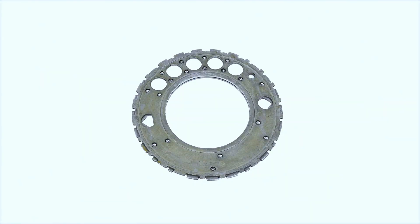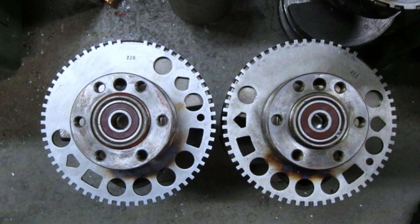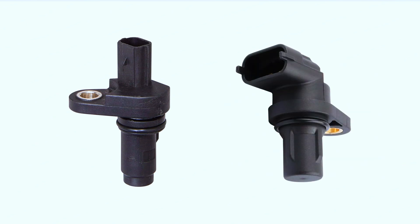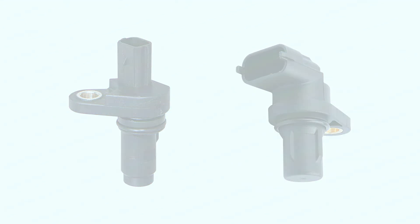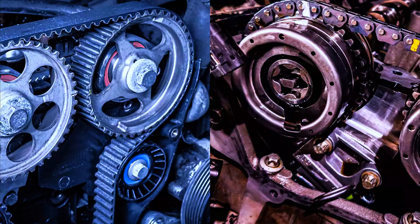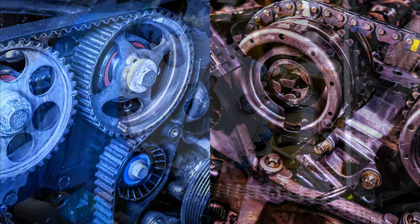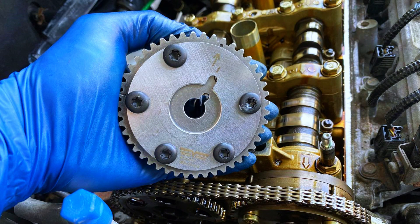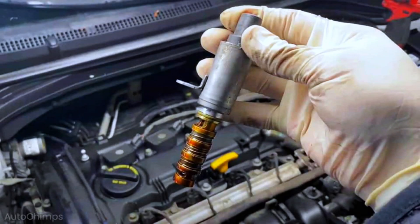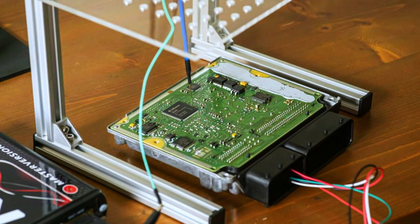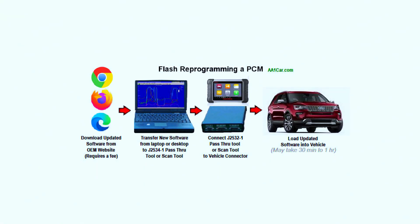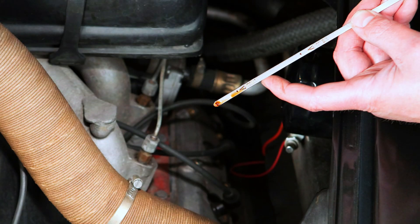Common causes include: a damaged camshaft or crankshaft reluctor wheel; a bad crankshaft or camshaft sensor; damaged wiring or loose connections; a damaged timing chain, belt tensioners, or guides; a defective variable valve timing (VVT) actuator — also known as a phaser; a faulty VVT solenoid — also known as an oil control valve; a problem with the PCM such as software needing an update; or a low oil level.